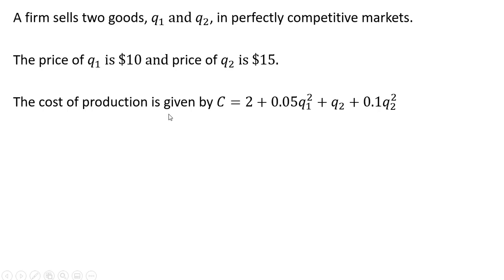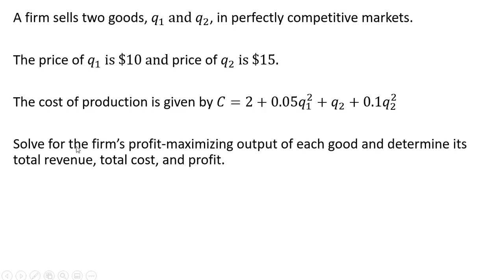The cost of production is given by the following equation. We want to solve for the firm's profit maximizing output of each good and determine its total revenue, total cost, and profit.